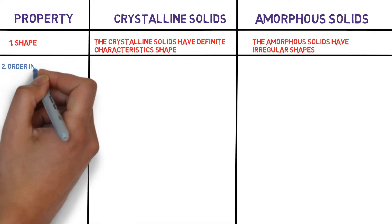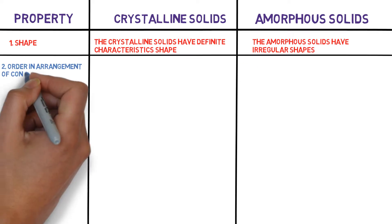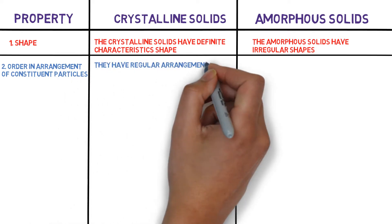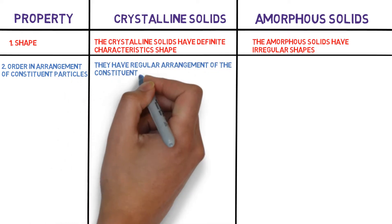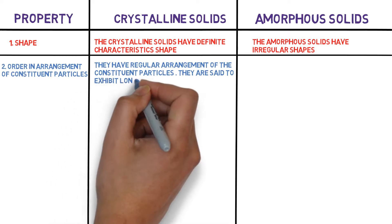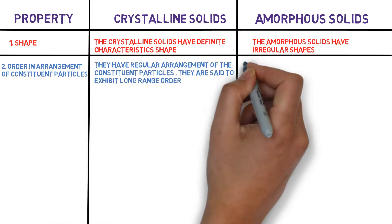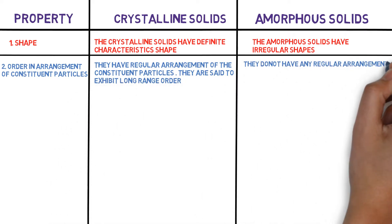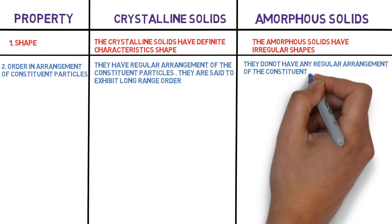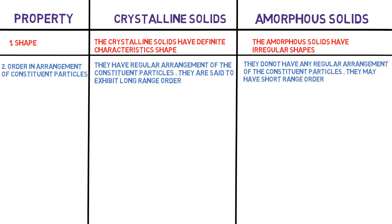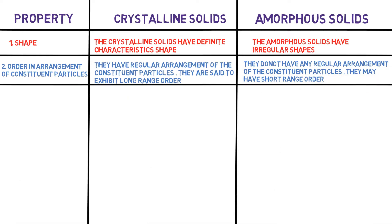The second property is order in the arrangement of constituent particles. Crystalline solids have a regular arrangement of constituent particles — they are said to exhibit long range order. Whereas amorphous solids do not have any regular arrangement of constituent particles; they have short range order.